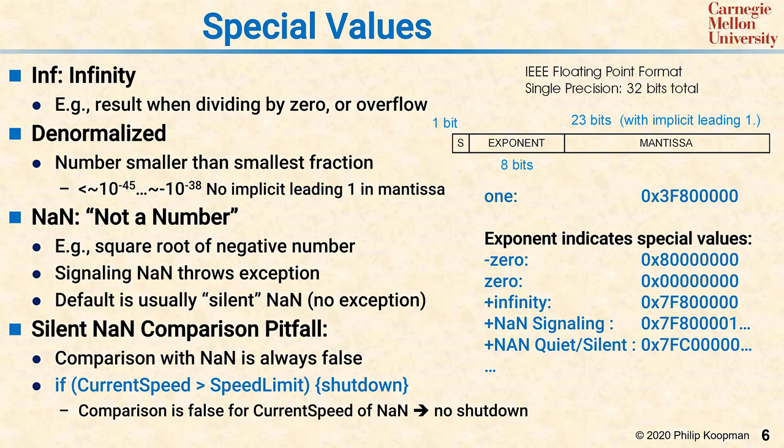Somewhat surprisingly, asking if NaN equals NaN is also false, so you should use the function isNaN in the C programming language instead. As you can see, special value rules can be tricky, and it's well worth your while to read a more extensive discussion of these topics before you do critical computations involving floating point numbers.